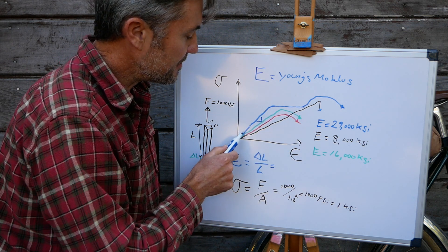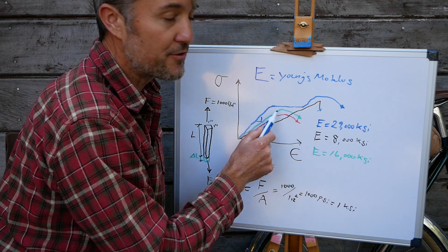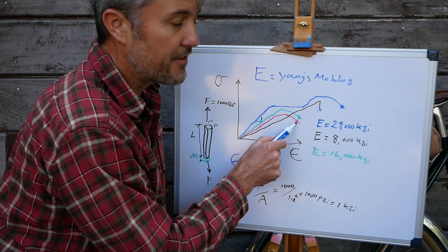So down here with titanium, it's linear elastic and then it goes non-linear and it breaks. Aluminum is very similar to that type of behavior. It is linear elastic, then it goes non-linear and then it breaks.